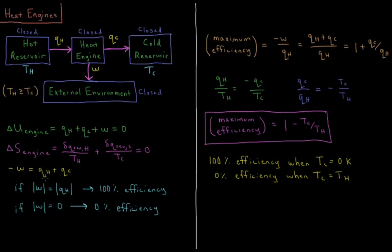Since delta U of the engine equals zero, we have negative W equals QH plus QC. If the magnitude of W equals QH, then all the heat pumped into the engine from the hot reservoir is output as work — that would be a 100% efficient engine. If the magnitude of work is zero, that would be a 0% efficient engine. The maximum efficiency is the negative work divided by QH, which equals QH plus QC over QH, or 1 plus QC over QH.